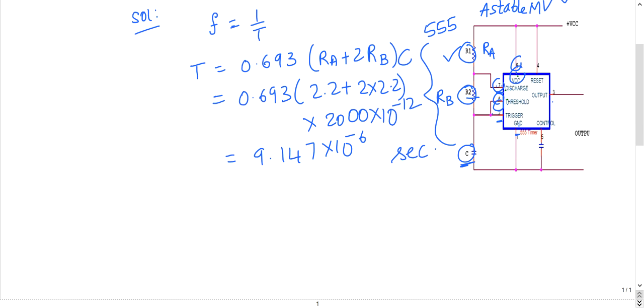So let us compute its frequency of oscillation. F is nothing but 1 by T, which is nothing but 1 by 9.147 into 10 power minus 6. This yields on calculation 109.3 kilohertz.